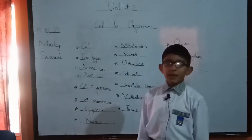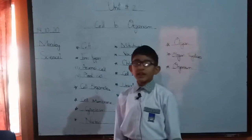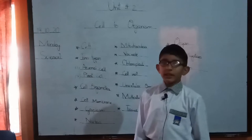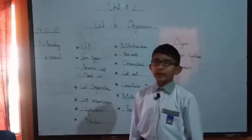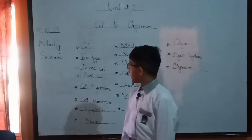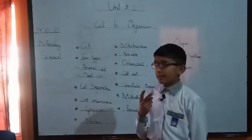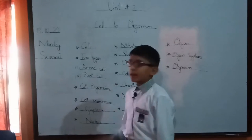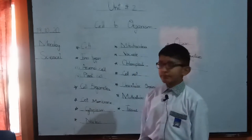Cell. Cell is a basic structure. Cell is a unit in the organism. Cell has two types: animal cells and plant cells.